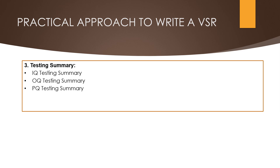Next is the PQ testing summary. Here we need to define the start date and completion date of performance qualification, and the performance qualification acceptance criteria which meets as per the PQ testing. We also need to define the key details of the PQ protocol number, status of pass or fail, and if any discrepancy is observed, the reference number of that discrepancy.